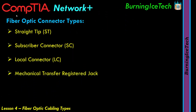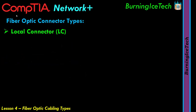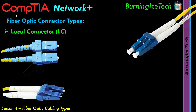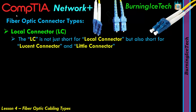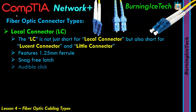The third connector on the list is the local connector, or LC for short. The LC does not actually just stand for local connector — it also stands for lucent connector or little connector. In IT, most people just call it LC and in some rare cases local connector. This LC connector features a 1.25 millimeter zirconia ferrule in a small form factor fiber optic connector housing with a snag-free latch, which gives an audible click upon engaging for reliable and high-density connections.